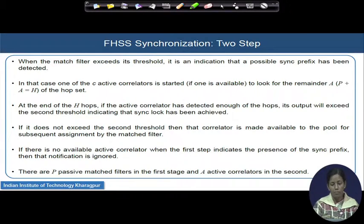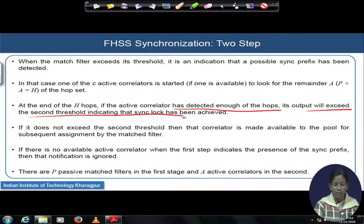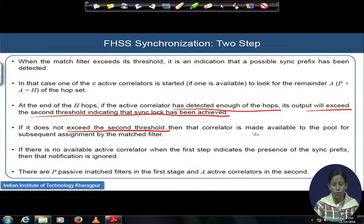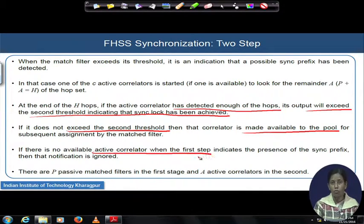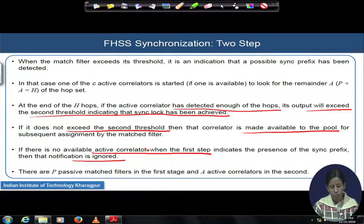The same concepts are re-explained here. At the end of capital H hops, if the active correlator has detected enough hops, its output will exceed the second threshold, indicating sync lock is achieved. If it does not exceed the second threshold, the correlator is returned to the pool for a new assignment. If no active correlator is available when the match filter detects part of the P tones, the whole notification is ignored.